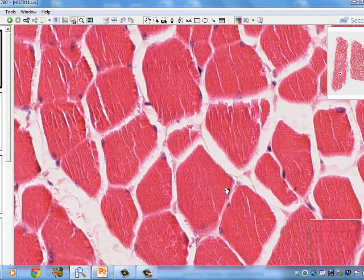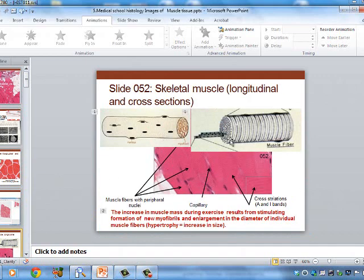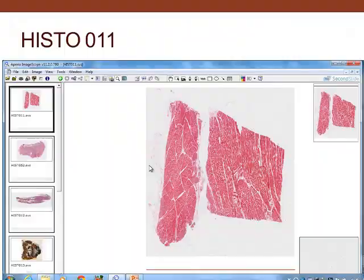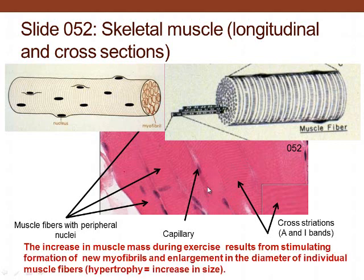Looking back at the slide, the muscle cell has its nuclei located on the periphery. Inside there are myofibrils, and the cross striations are the result of interactions of actin and myosin in the A and I bands. We can also see capillaries in there. Increase in muscle mass during exercise results from stimulation of new myofibrils — more myofibrils within the cell, not an increase in number of cells, but an increase in the size of cells.